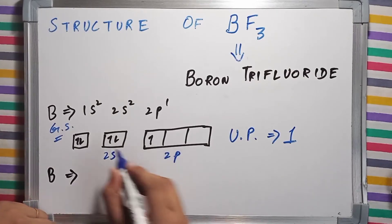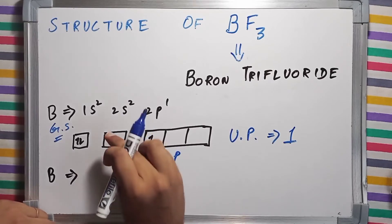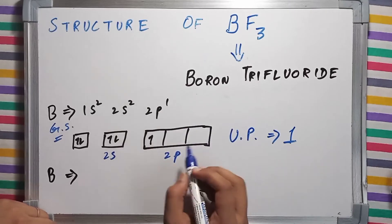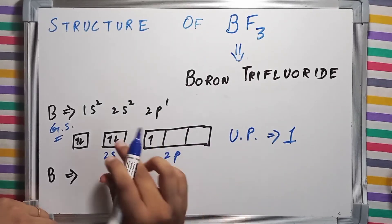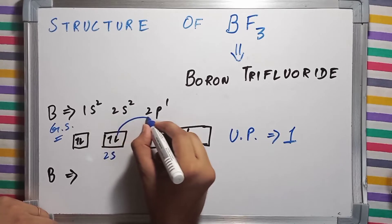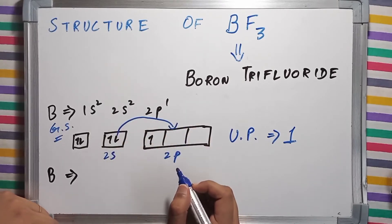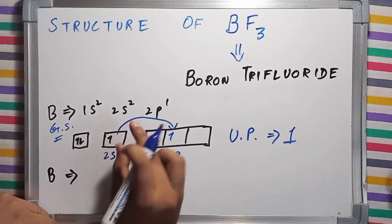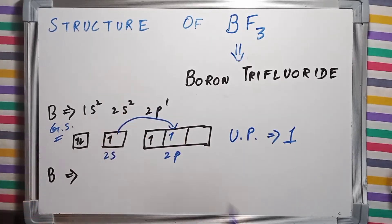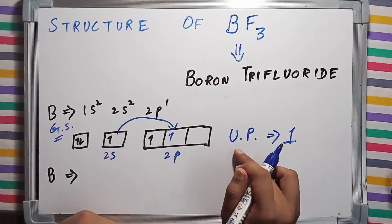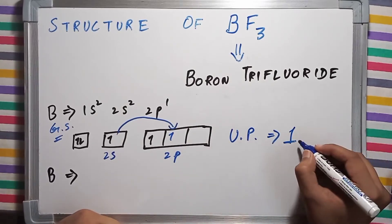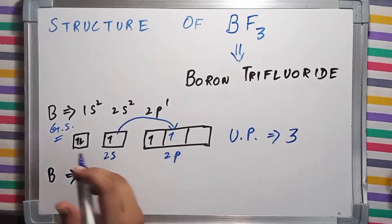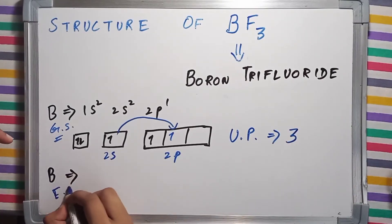During excitation, one of the electrons from the 2s subshell jumps and resides inside one of the orbitals of 2p. So this electron goes inside this orbital. Now the number of unpaired electrons will be not one but three, and this is for the excited state.